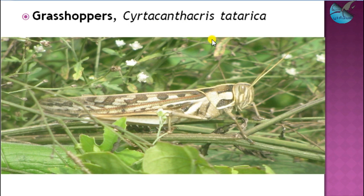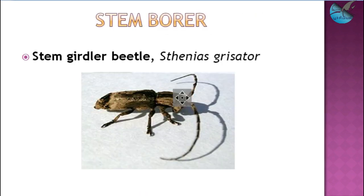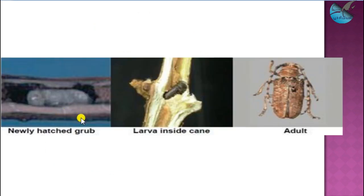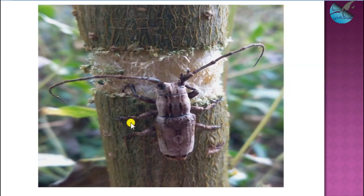Another minor pest is the grasshopper, Schistocerca gregaria. Next come the stem borers: the stem girdler, also a common pest in grapes, Theresia gracilatrix. As the name indicates, it girdles the stems. Newly hatched grubs stay inside the stem, feed, develop into pupa, then come out as adults, girdling the stem.